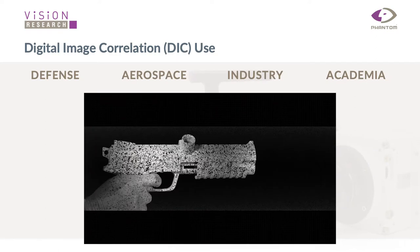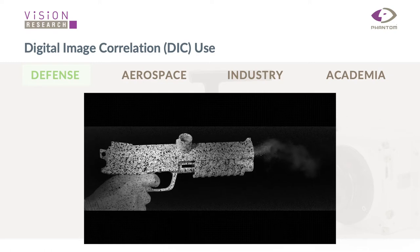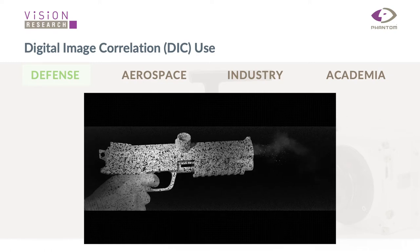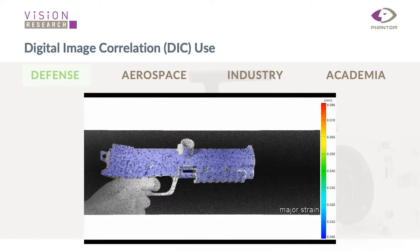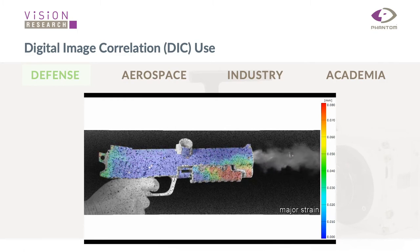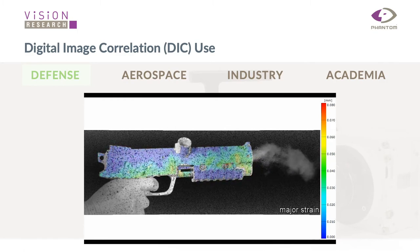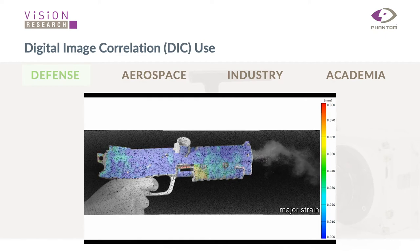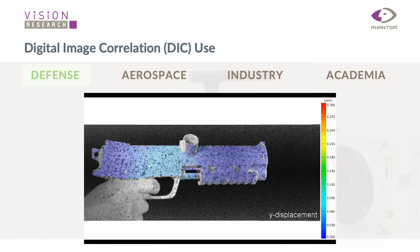Digital image correlation has been used for a wide variety of applications. For the most part, we've seen it used in defense, aerospace, and all across academia. One example is a paintball gun marked up using spray paint — a white background with black speckles. When you fire the weapon, you can use digital image correlation to look at the stresses and strains across the weapon as it fires.